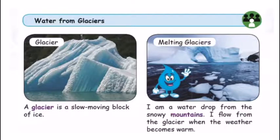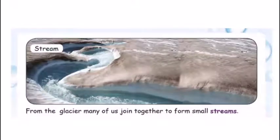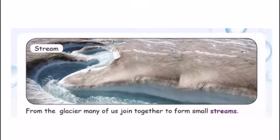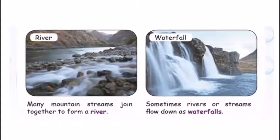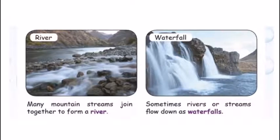The water drops will melt. The stream is very narrow. From the glacier, many small flows join together to form a stream. Sometimes rivers or streams flow down as a waterfall.